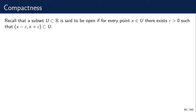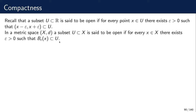Now we're almost ready to define the notion of compactness. Suppose that we have a metric space. We say that a set U is an open subset of X if for every point we can find a positive epsilon such that the open ball — the collection of all points whose distance from x is smaller than epsilon — is contained in the set U. If this happens for every point, then the set U is open.